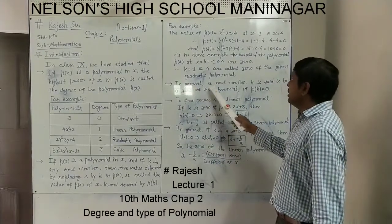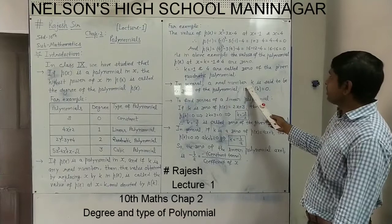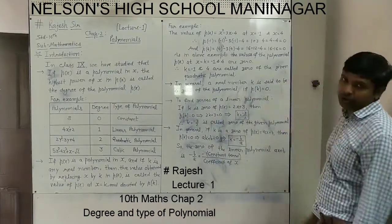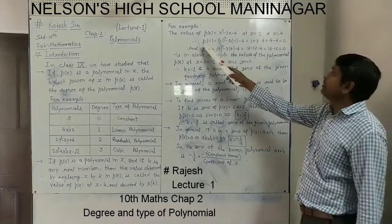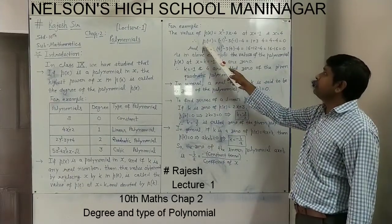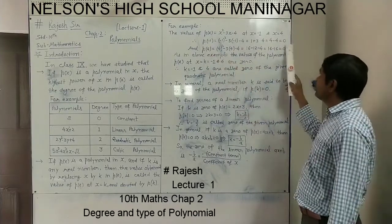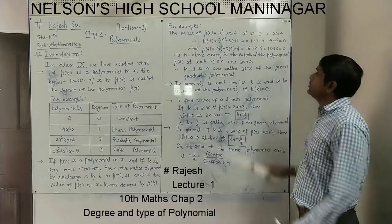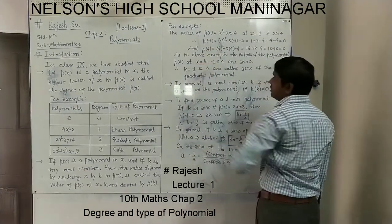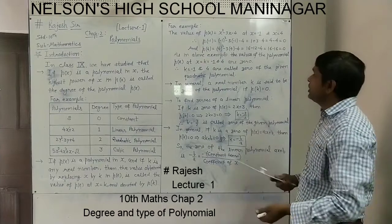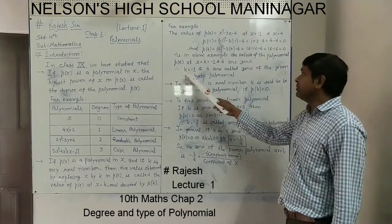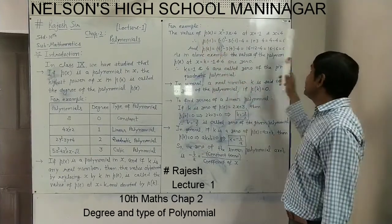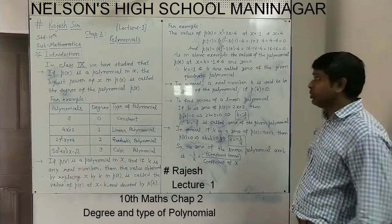In general, a real number k is said to be a zero of the polynomial p(x) if p(k) is equal to 0. Like in this example: if k equals minus 1, we put it and get p(minus 1) equal to 0; if k equals 4, we get p(4) equal to 0. So minus 1 and 4 are called zeros of the polynomial. In general, putting any value k in place of x gives p(k), and if p(k) equals 0, then k is called the zero of the polynomial.